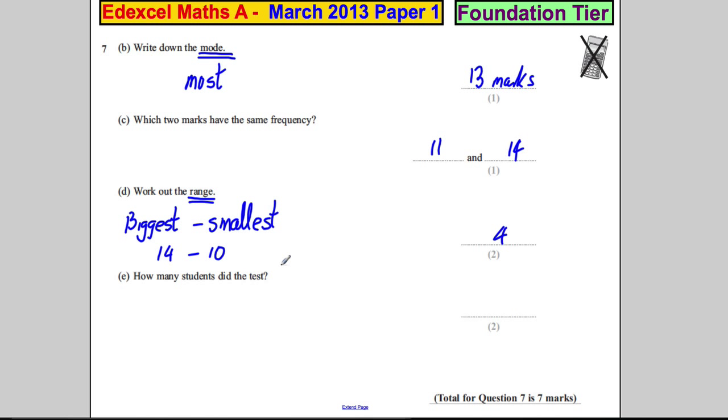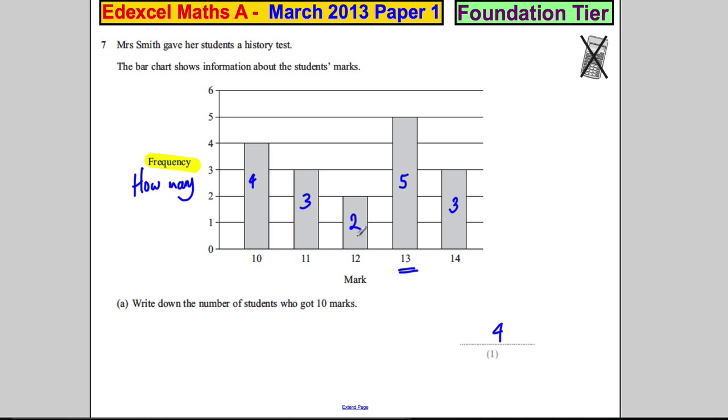Now be very careful here. Again, don't write 5 take away 2 is 3. The range isn't about the frequency. It's about the range of marks. Think about it in a class. What's the range of marks in the class? Well, the highest kid got 14 and the kid who got the least got 10. So it's 14 take away 10 is 4.